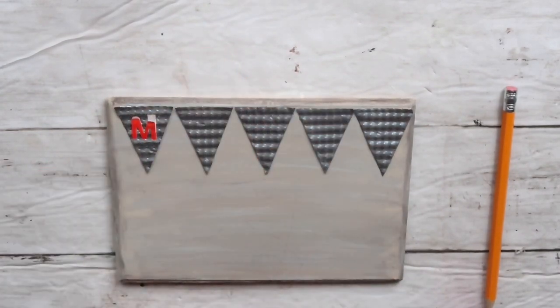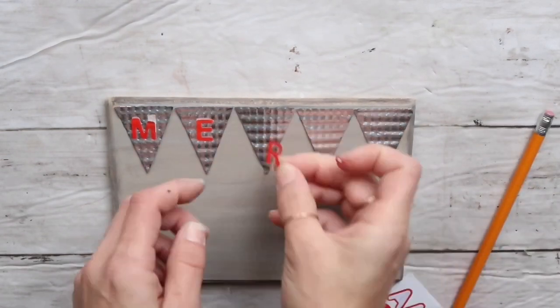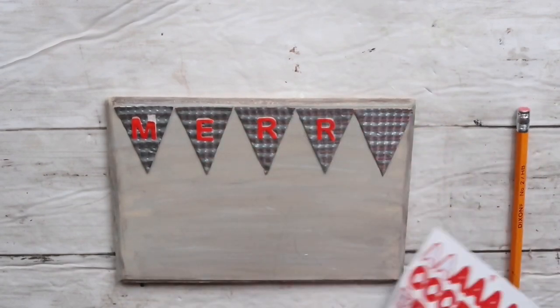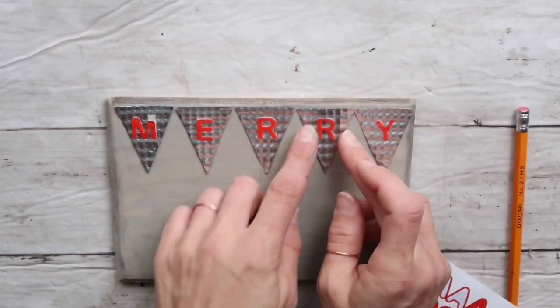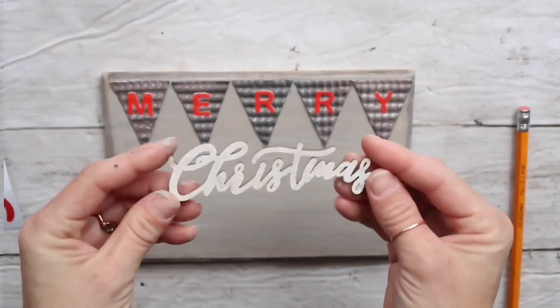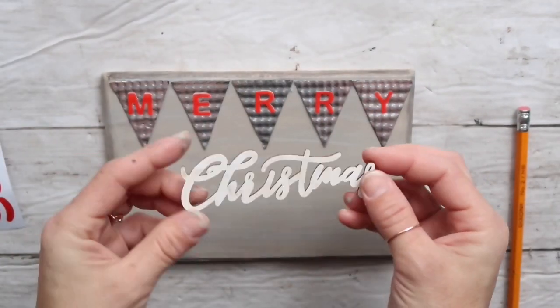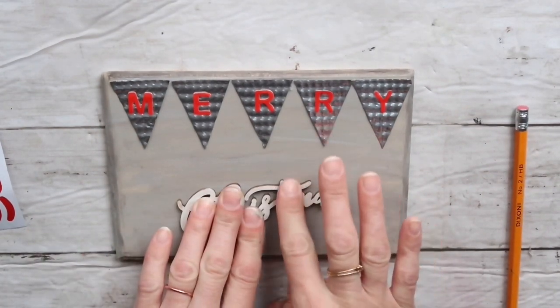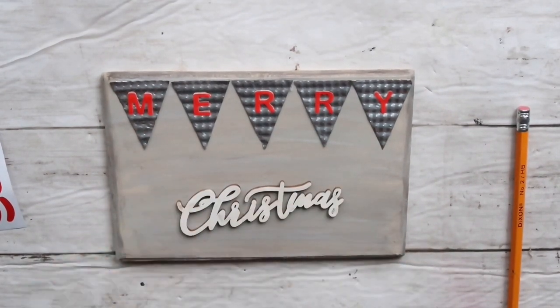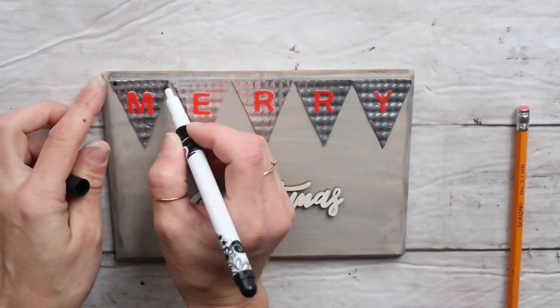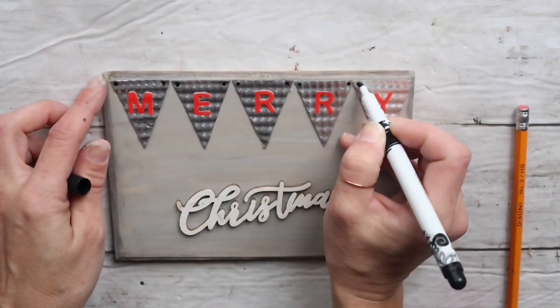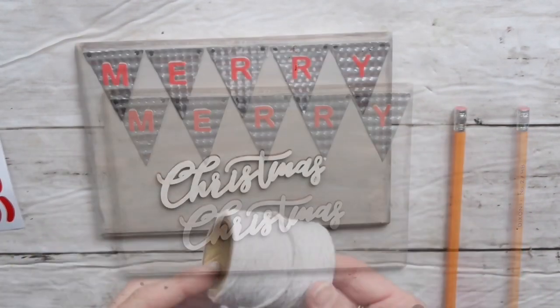After I was done with this, I'm taking these stickers that came from the dollar tree and spelling out the word 'Merry'. After I positioned them the way I wanted, I made sure to press them all down so they stay in place. Next I am taking this wood word 'Christmas' that came from Target dollar spot. It is self-adhesive and it's perfect - I just stick it on there.